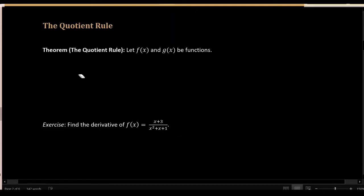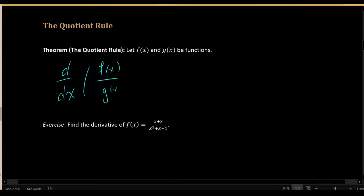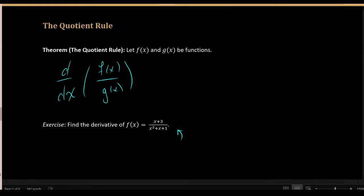For the quotient rule, the setting is, as the name suggests, you're trying to find the derivative of the function f of x divided by another function g of x. An example of such a situation would be trying to find the derivative of the function x plus 3 divided by the function x squared plus x plus 1.